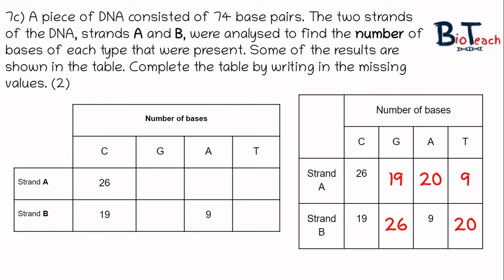The key things with questions like this is to always keep the base pairing at the forefront of your mind and to highlight the key information in the question. In this example, the 74 bases in the DNA was key to allow us to work out the number of adenine and thymine.